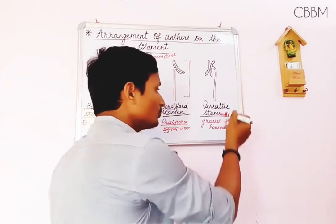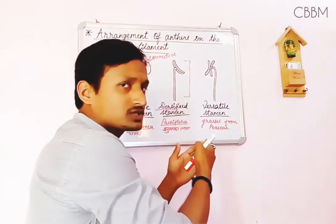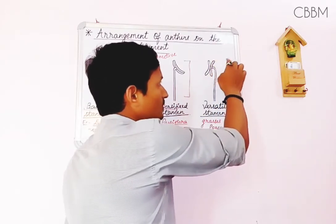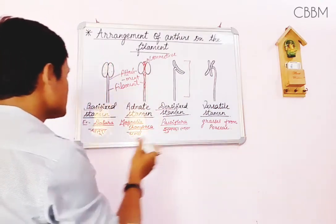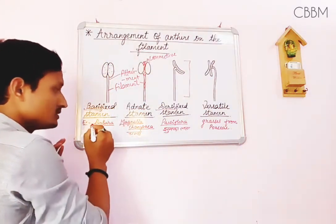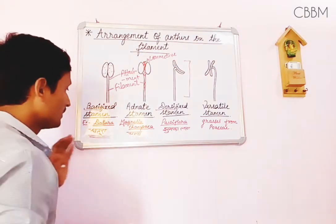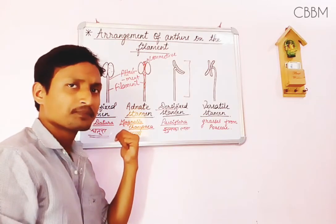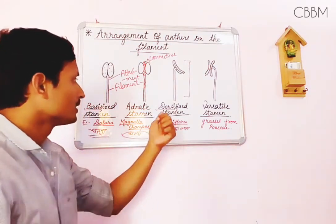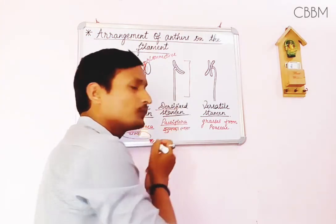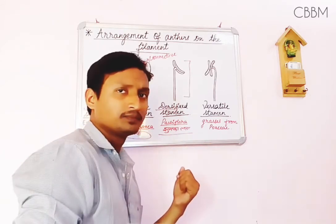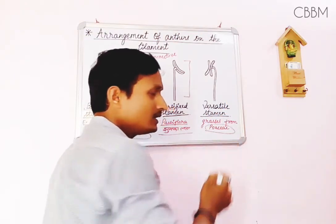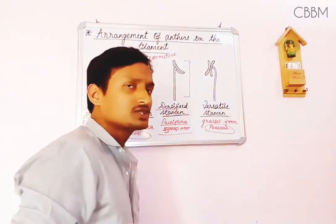Versatile stamen is the type in which the anther is attached to the filament at its midpoint, allowing it to swing freely. Now for examples: basifixed stamen is found in Datura (family Solanaceae); adnate stamen is found in Magnolia champaca (Champa); dorsifixed stamen is found in Passiflora (also called Jhunkalata); and versatile stamen is found frequently in the Poaceae family — the grasses possess this type of stamen.